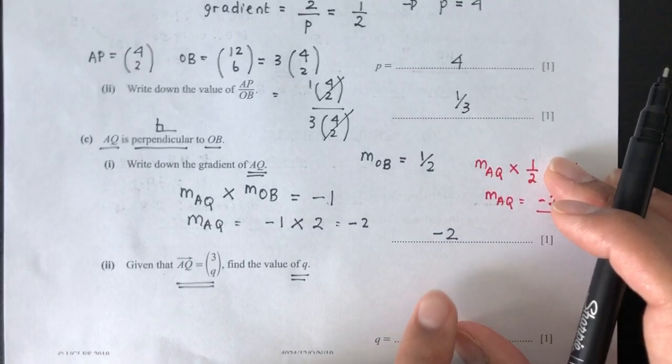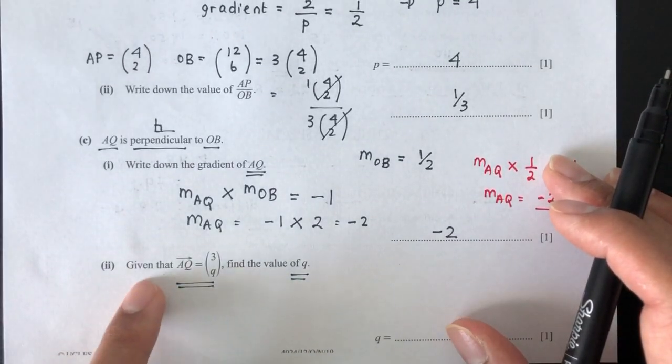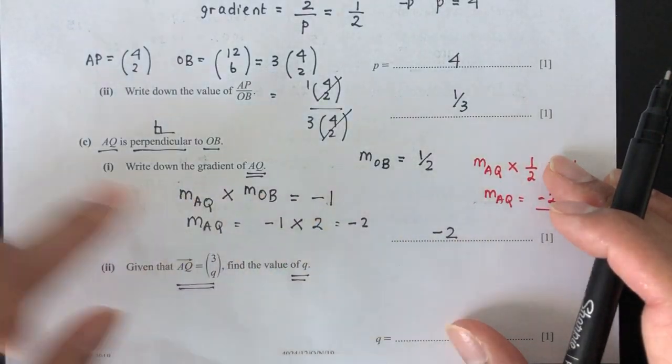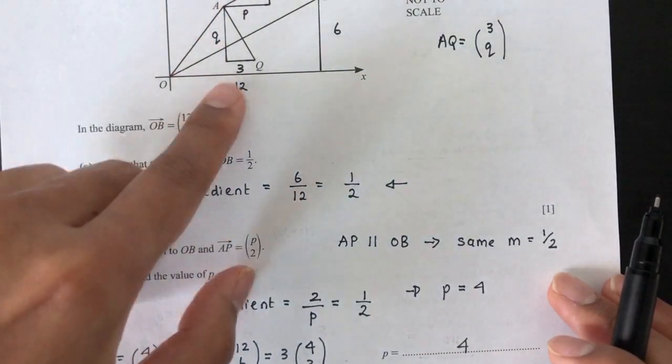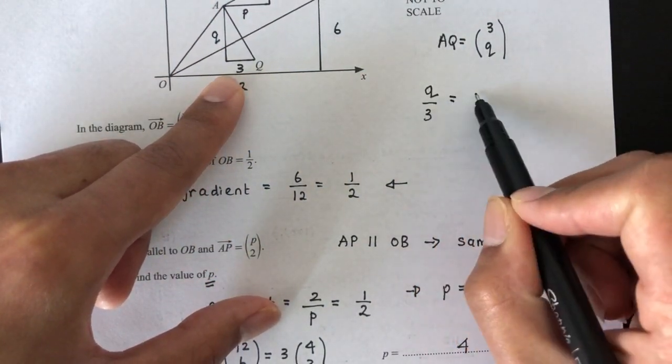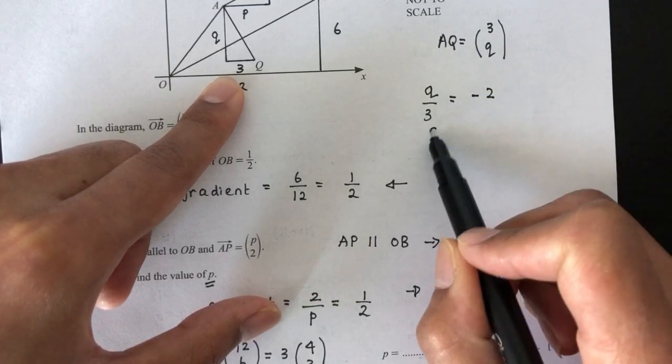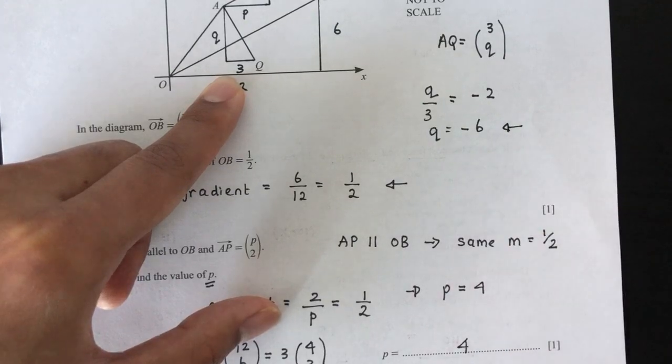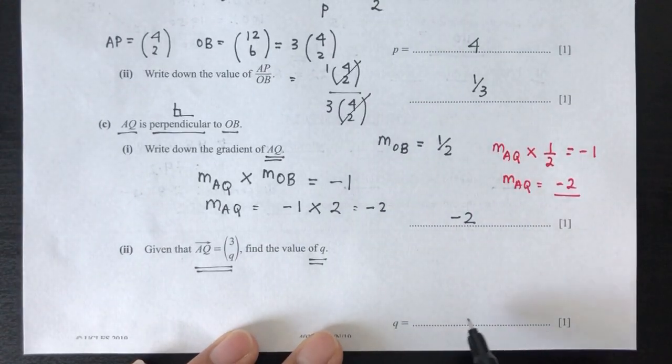Now as you have seen here, the gradient of this one is given by minus 2, of AQ is minus 2. So how do you find gradient? As I've explained, it is height divided by base. So Q divided by 3 is supposed to give you your gradient, which is minus 2. So Q has to be minus 6. And that is your answer for part 2.